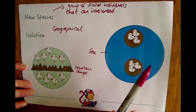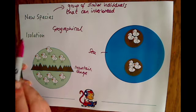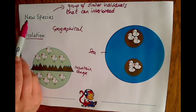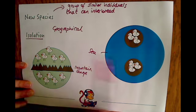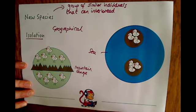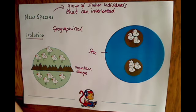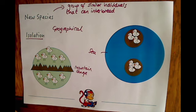For foundation tier, all you really need to know is that isolation can cause two new species to form because they can no longer interbreed with each other. Depending on the organism's ability to move, there could be several different things that cause a geographical barrier — it could be that tectonic plates were moving, a valley was formed, or there was a fast-flowing river.